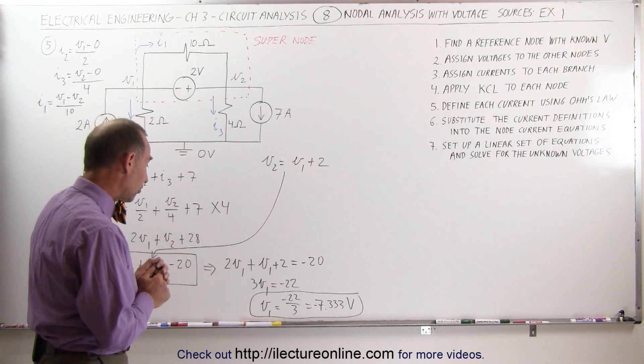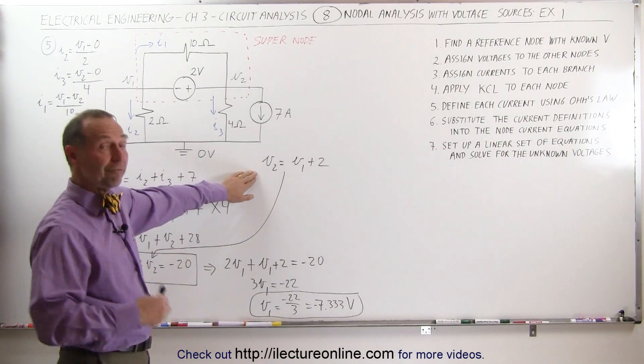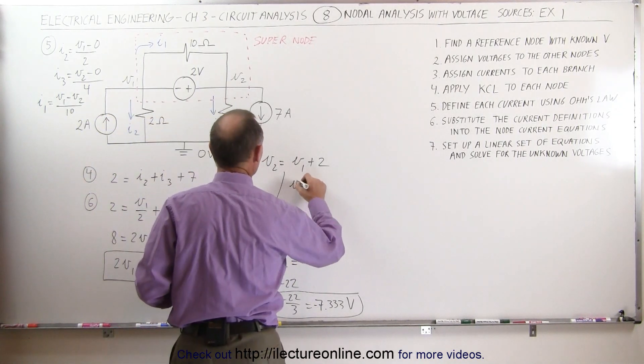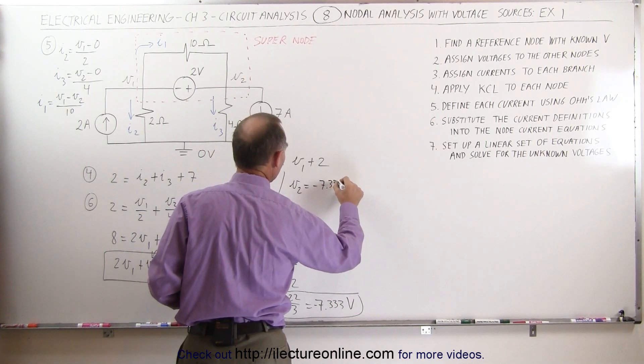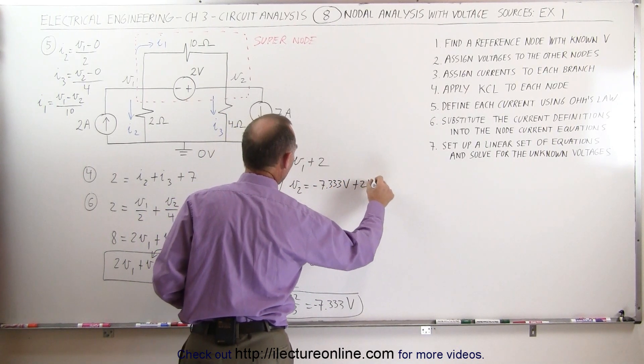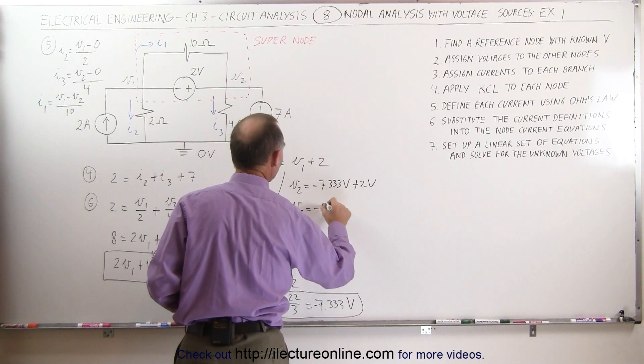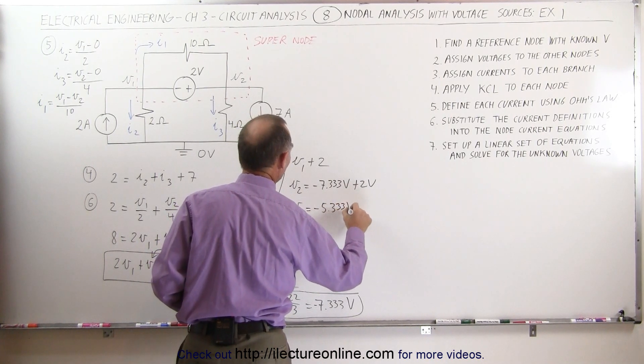Now that I have my voltage at V1, I can come back up here and find the voltage for V2. V2 is equal to V1, which is minus 7.333 volts. Add 2 volts to that, and so V2 now becomes minus 5.333 volts.